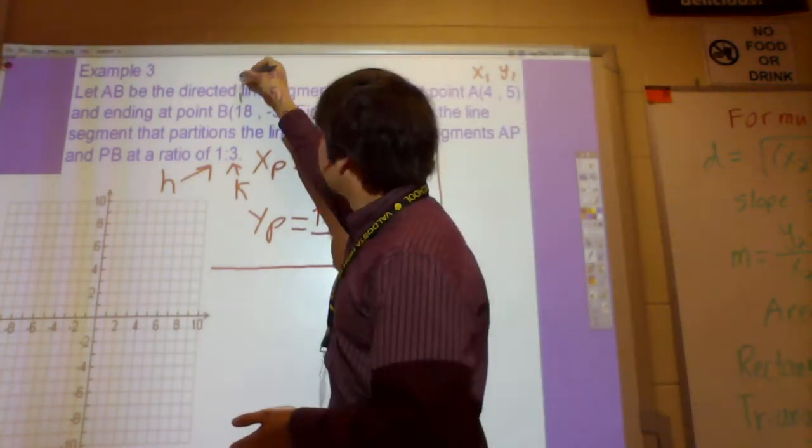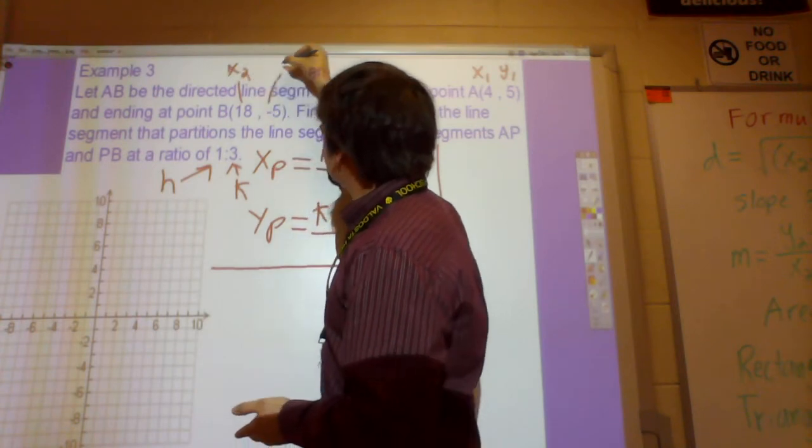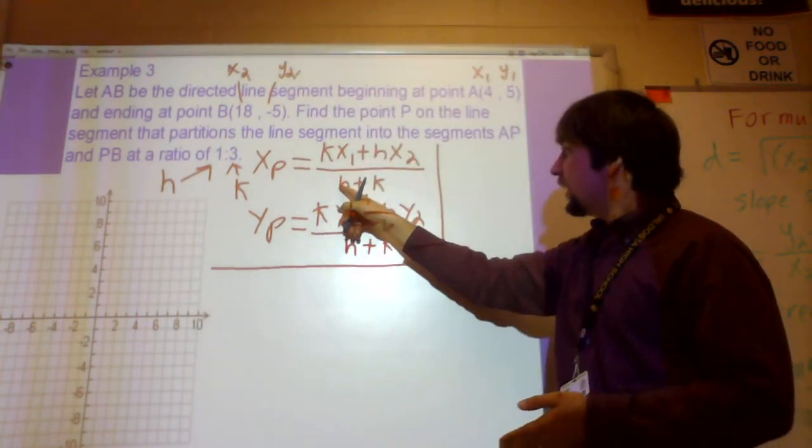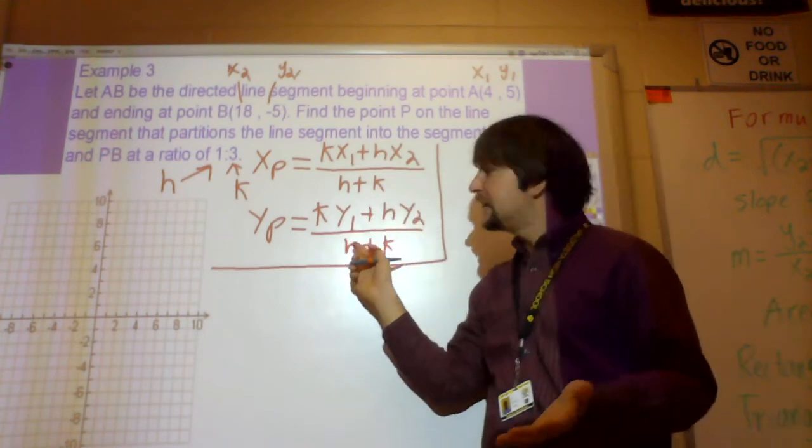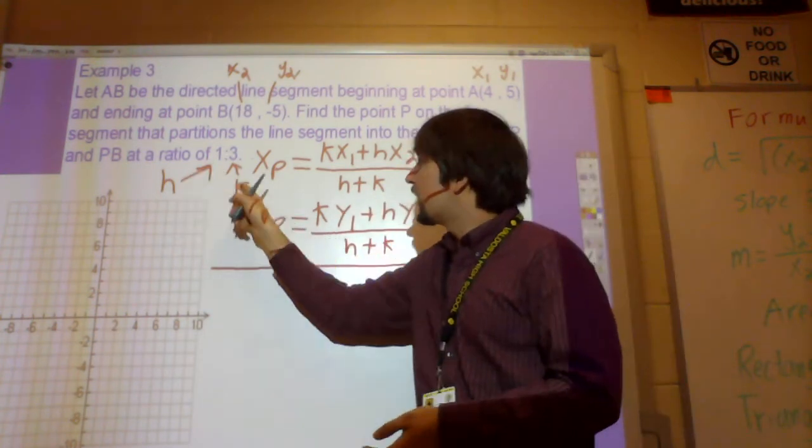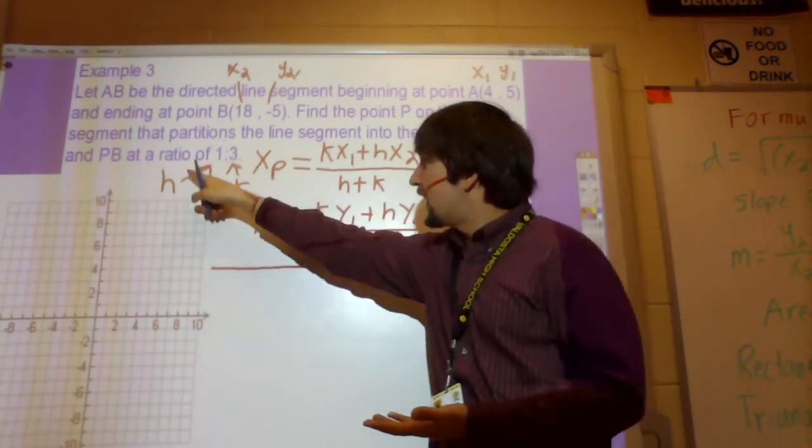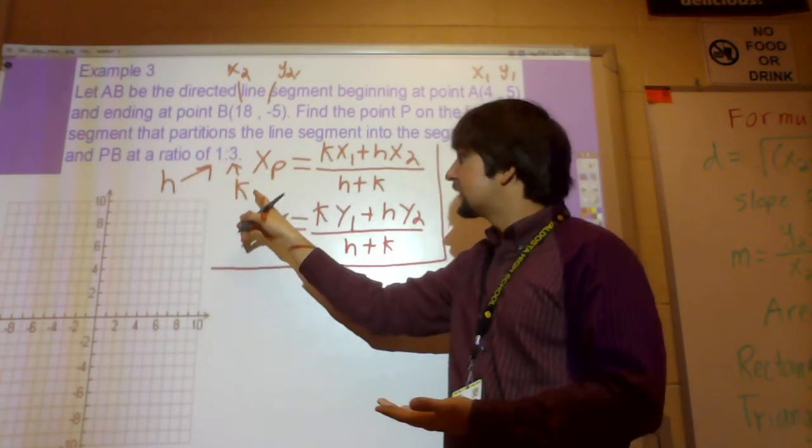So X2 would be over here, X2, and this would be the other point, Y2, divided by H plus K. Well, what is this H and K? The H and K are actually the ratio components, where H is the first part and the K is the second part. That would be how you find the X.